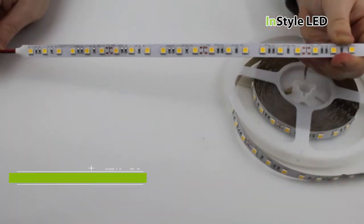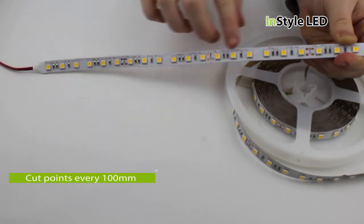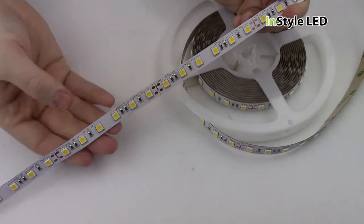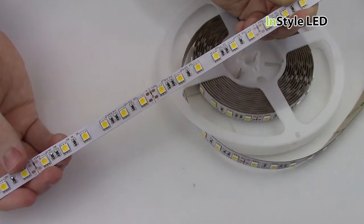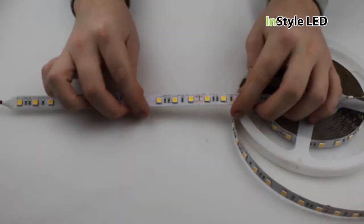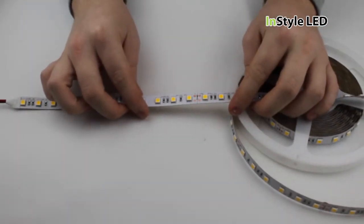The cut points for this LED tape are every 100mm and are marked here. Using a pair of scissors you can cut the LED tape in between the four copper pads.